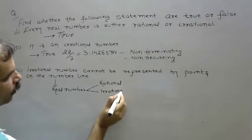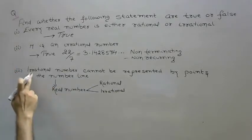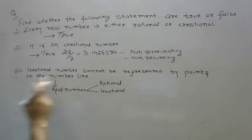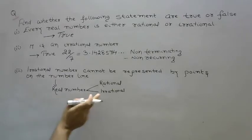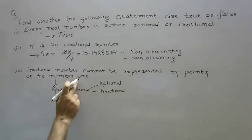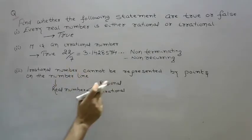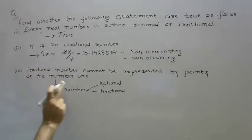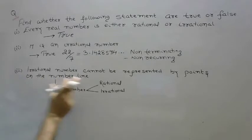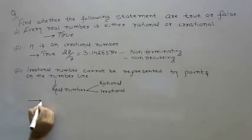Okay? So what are you saying? Irrational numbers cannot be represented by points on the number line. If we represent real numbers on the number line, then it's irrational. So that means we can represent irrational numbers on the number line. That means this statement is false.